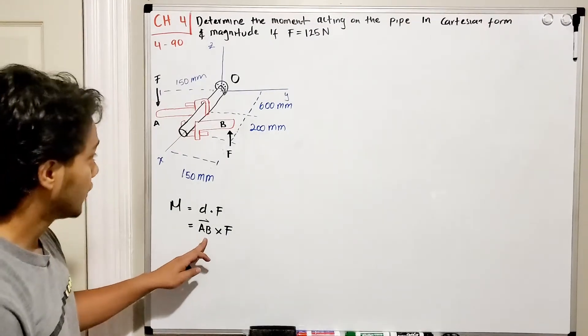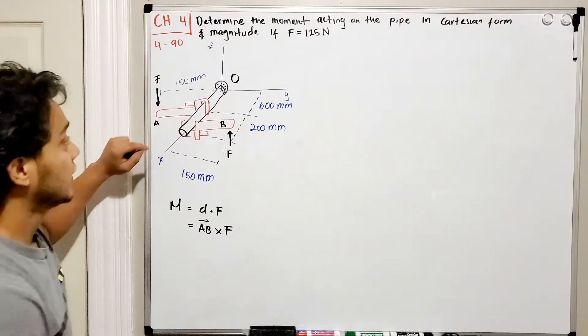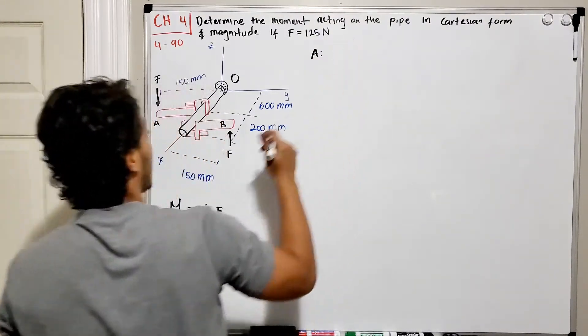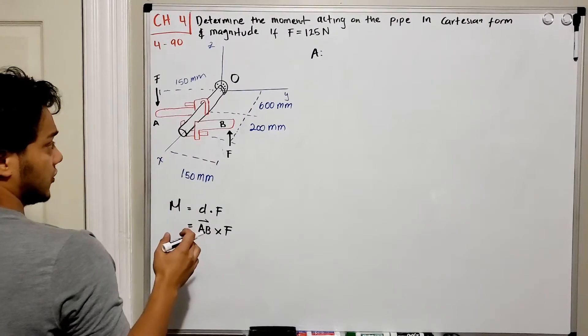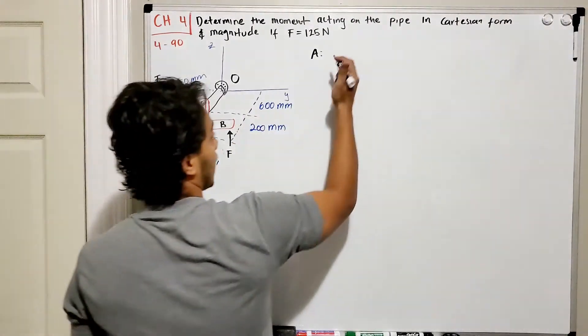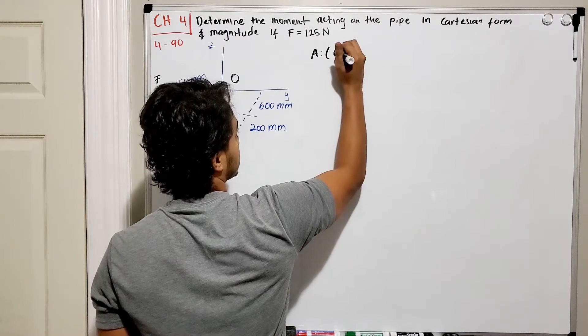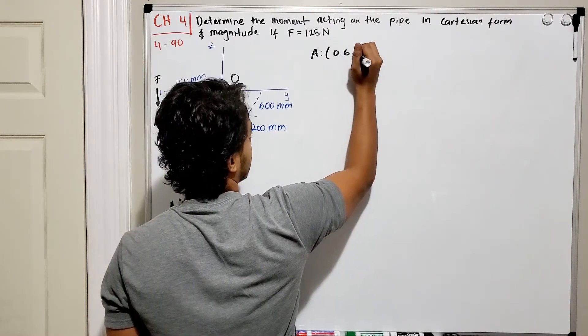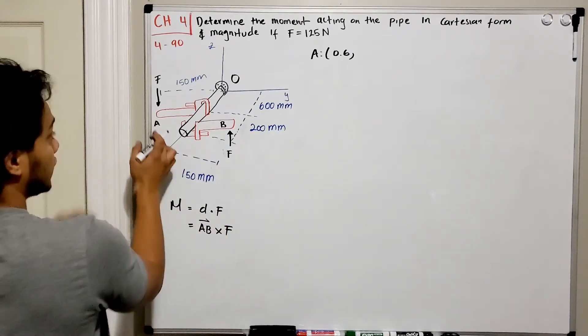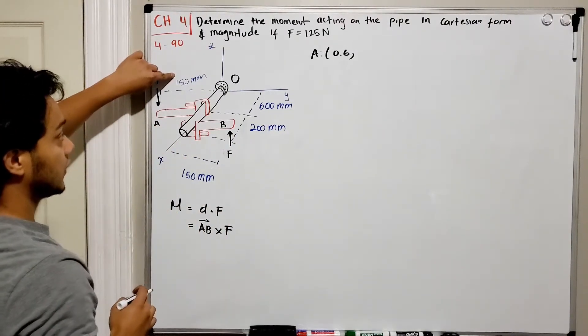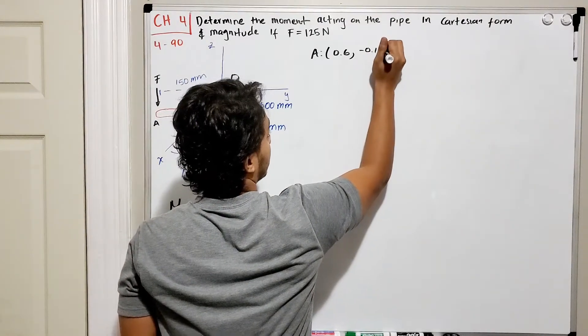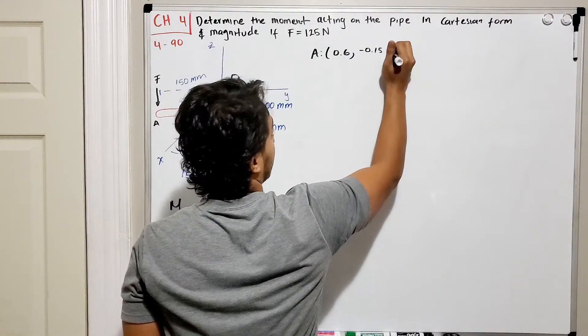If we want to find the vector AB we need to first find its position. So the position of A in the x-direction is going to be 600 mm, so I'm going to convert it into meters which is 0.6 meters. The position in y is actually negative 150 mm so it's going to be negative 0.15.